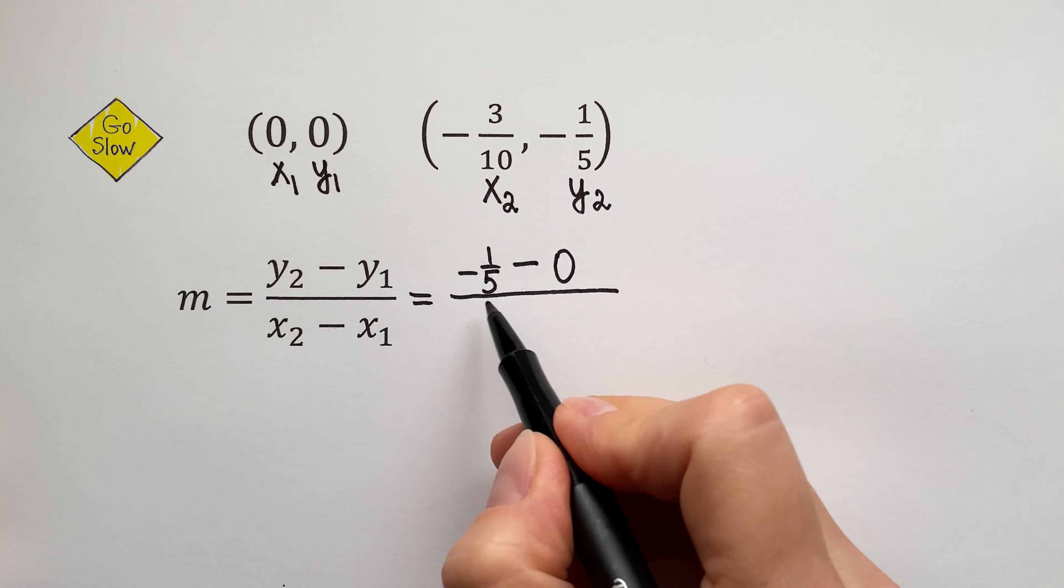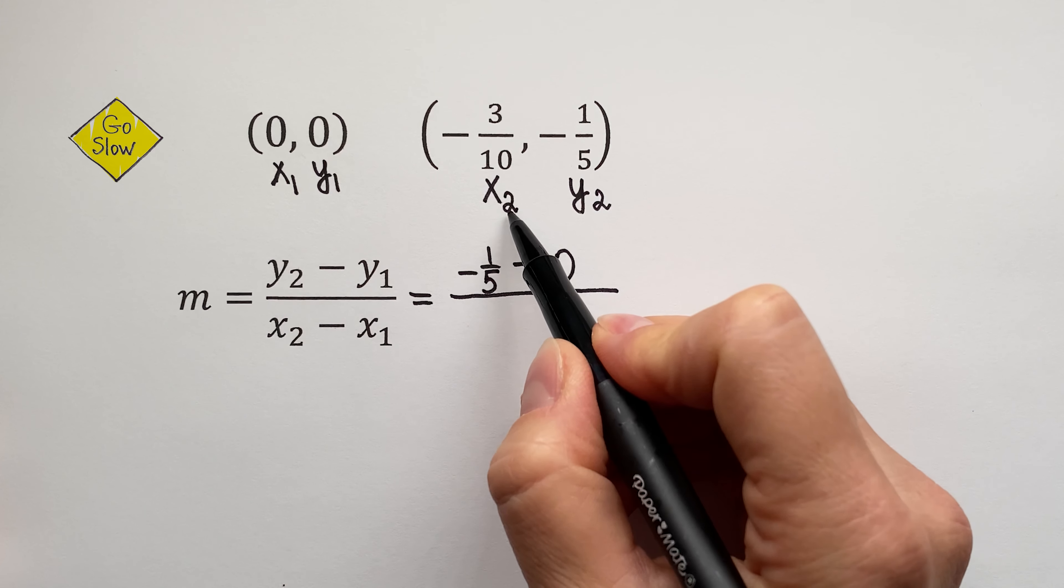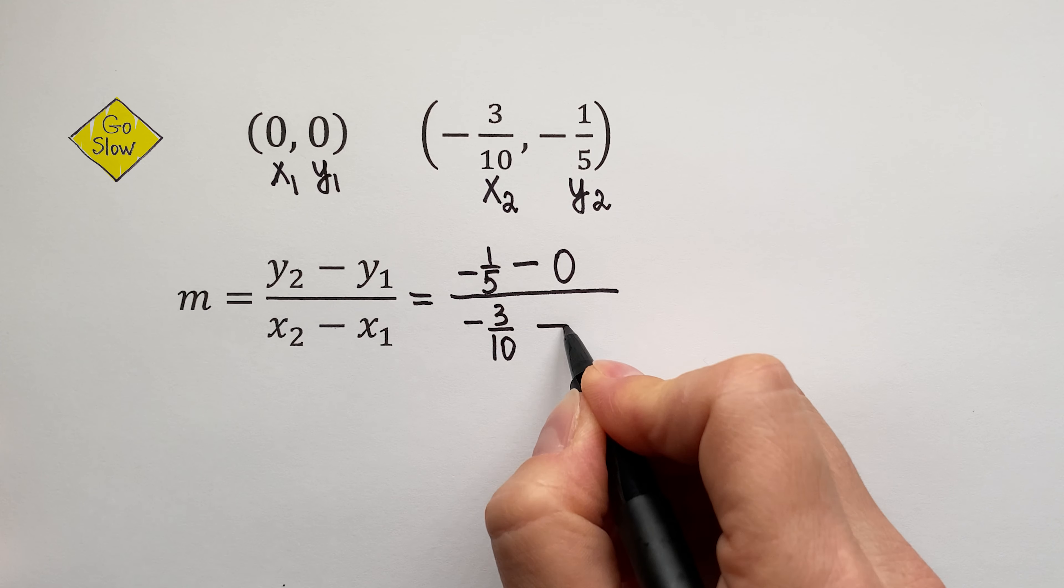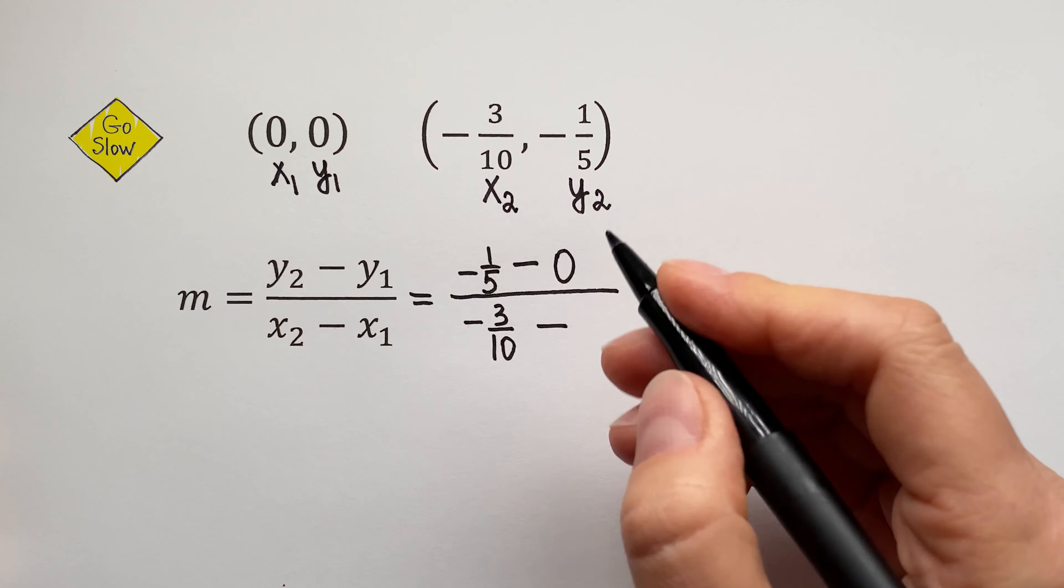Very good! Over x2. x2 is negative 3 tenths, negative 3 tenths, minus x1. x1 is 0.